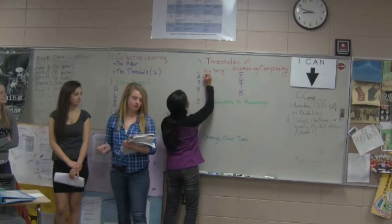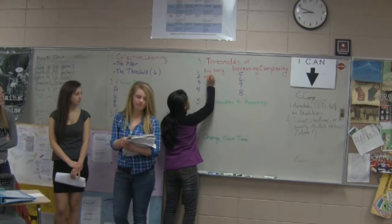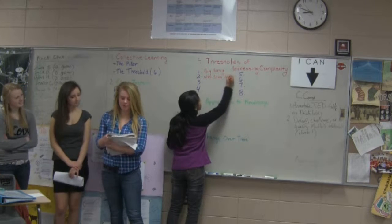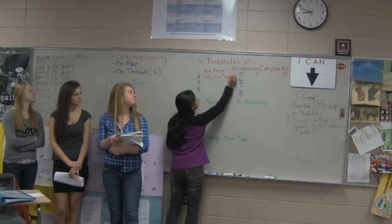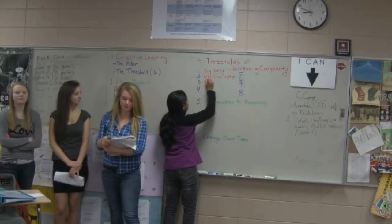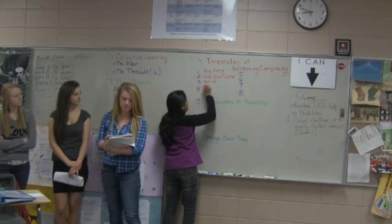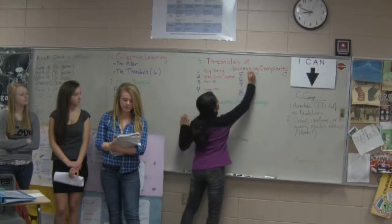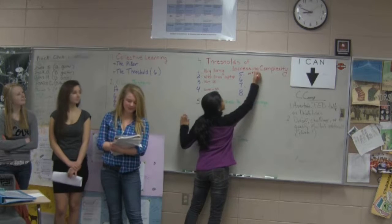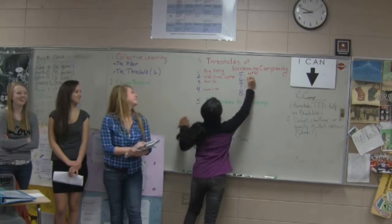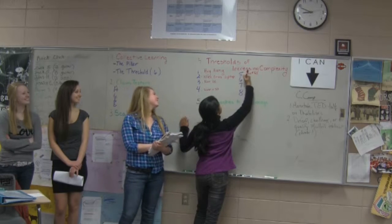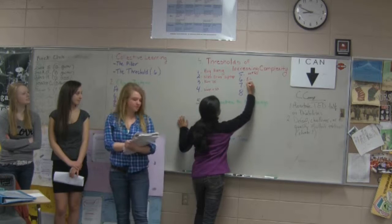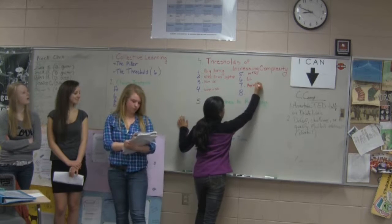The second threshold is called When Stars Light Up. Three is New Chemical Elements. Number four is Earth and the Solar System. Number five is Life. Six is Collective Learning. Number seven is Agriculture. And eight is the Modern Revolution. Each of these leads up to the next.